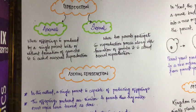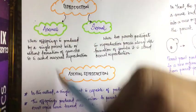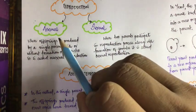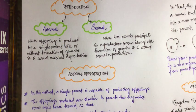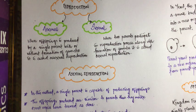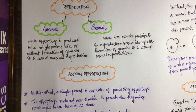Now let us see the different types of reproduction. Reproduction is of two types: asexual mode of reproduction and sexual mode of reproduction. In asexual mode of reproduction, offspring are produced by a single parent with or without the formation of gametes. In this process, only one single parent is involved to produce the next generation.